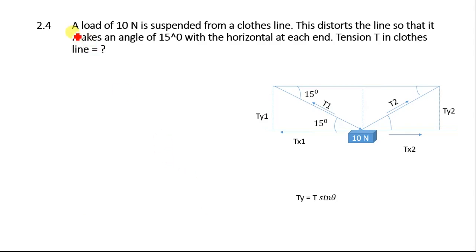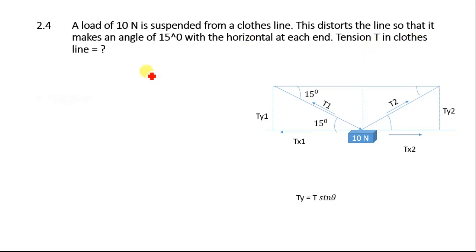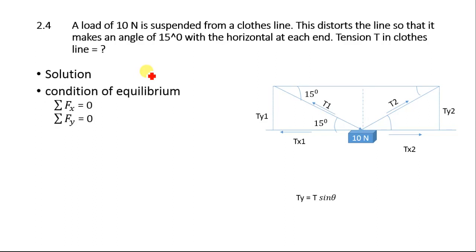Problem 2.4: A load of 10 newtons is suspended from a clothesline. This distorts the line so that it makes an angle of 15 degrees with the horizontal at each end. Find the tension T in the clothesline. We apply the conditions of equilibrium.